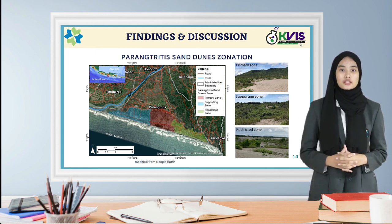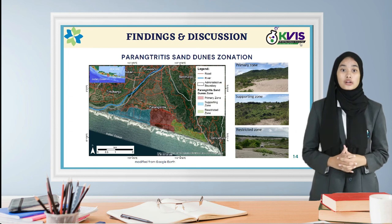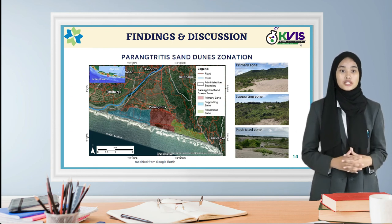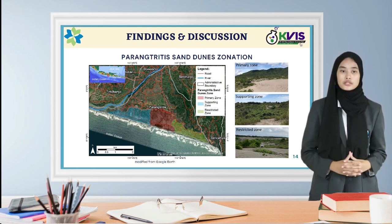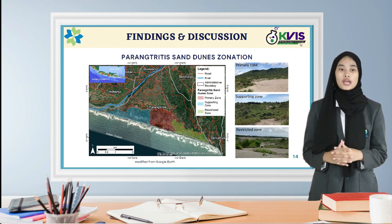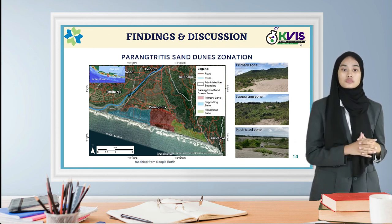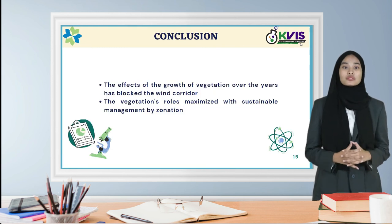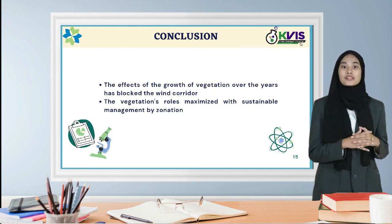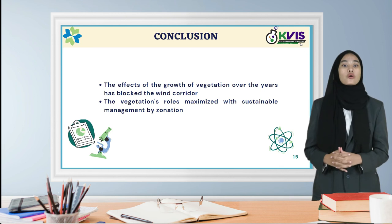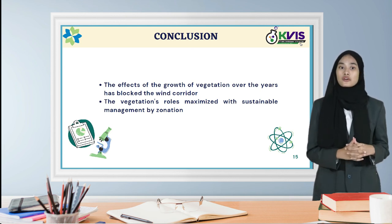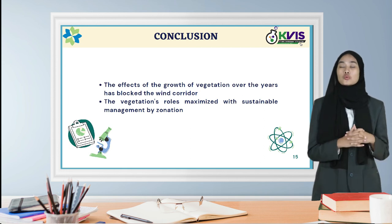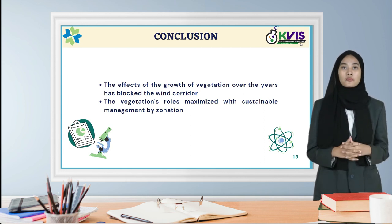Thirdly, the supporting zone. Vegetation that grows in this area serves as a barrier and protection to prevent the movement of sand to residential areas outside the primary zone. Besides that, anthropogenic activities are allowed, namely tourism areas and settlements to support the economic activities. Finally, we would like to conclude that the impact of vegetation growth over the years has blocked moving corridors that disrupt sand dune function, and the vegetation structure can be maximized with sustainable management of zoning policy.